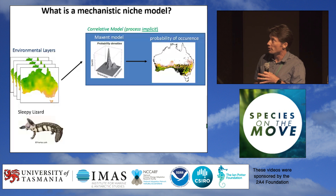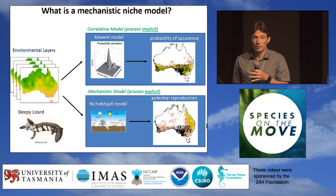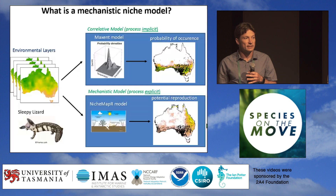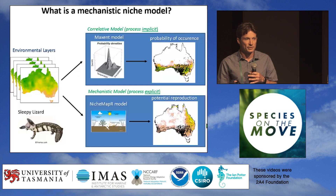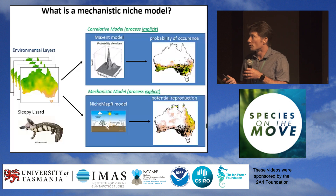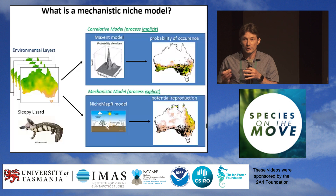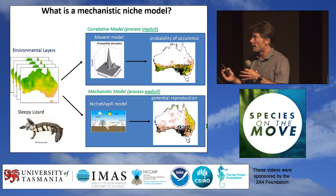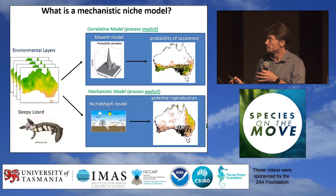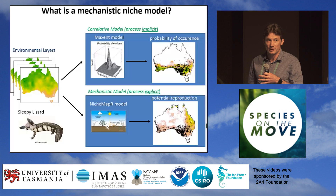So if we want to take that approach, we want a mechanistic species distribution modelling approach — or a mechanistic niche modelling approach — where we have specific processes in mind. We take as our starting point not the distribution of the species but the functional traits of that organism, and connect them to our predictor variables using equations that depict those hypothesised mechanisms.